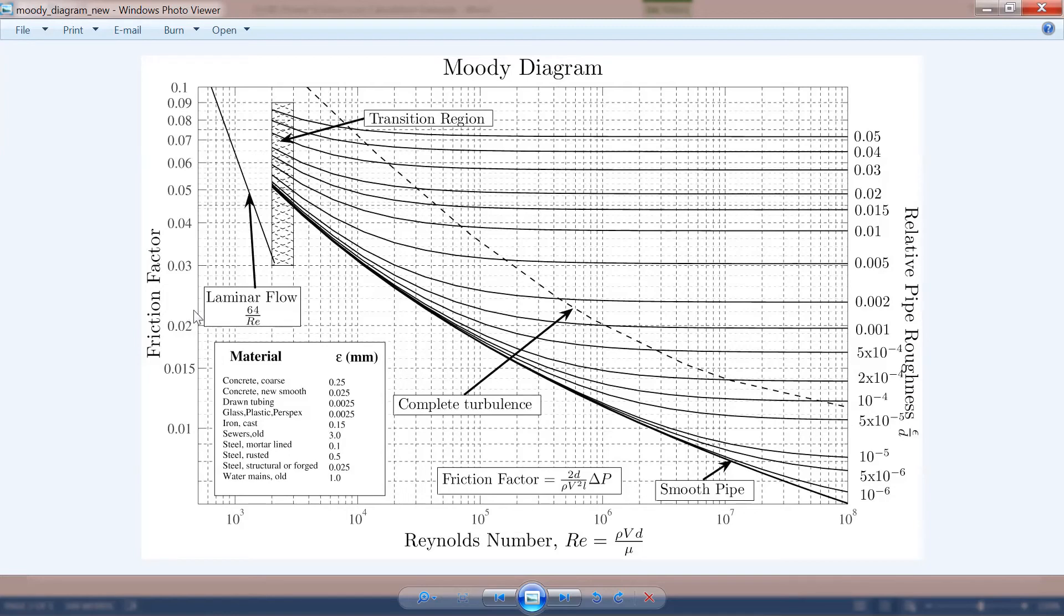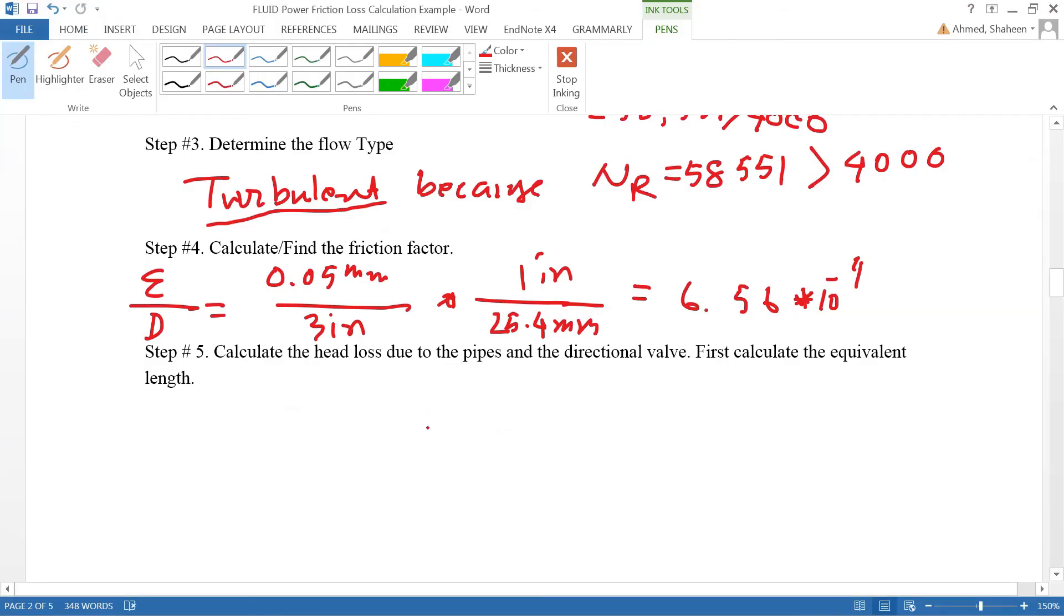Somewhere here, I would say 0.022 or 0.023, something like that. So the friction factor is f equal to 0.022 or 0.023.